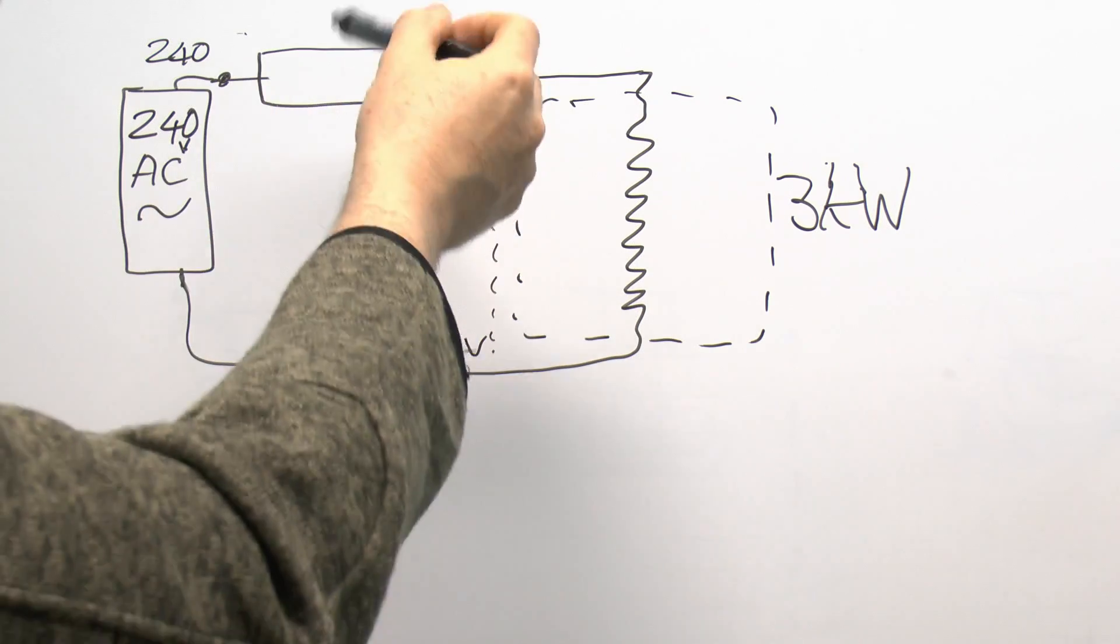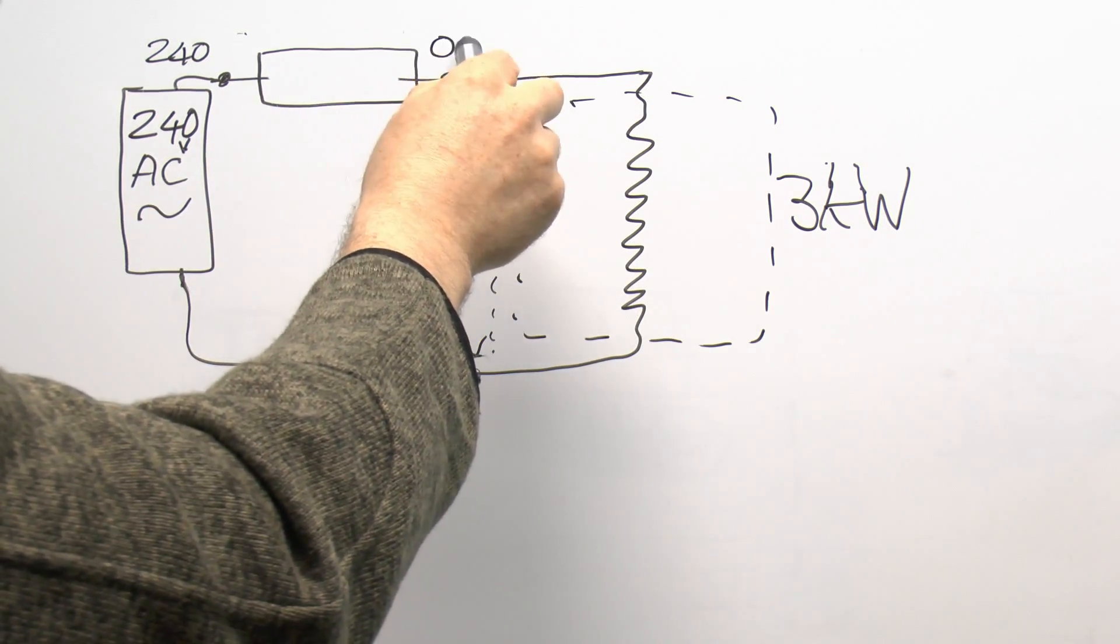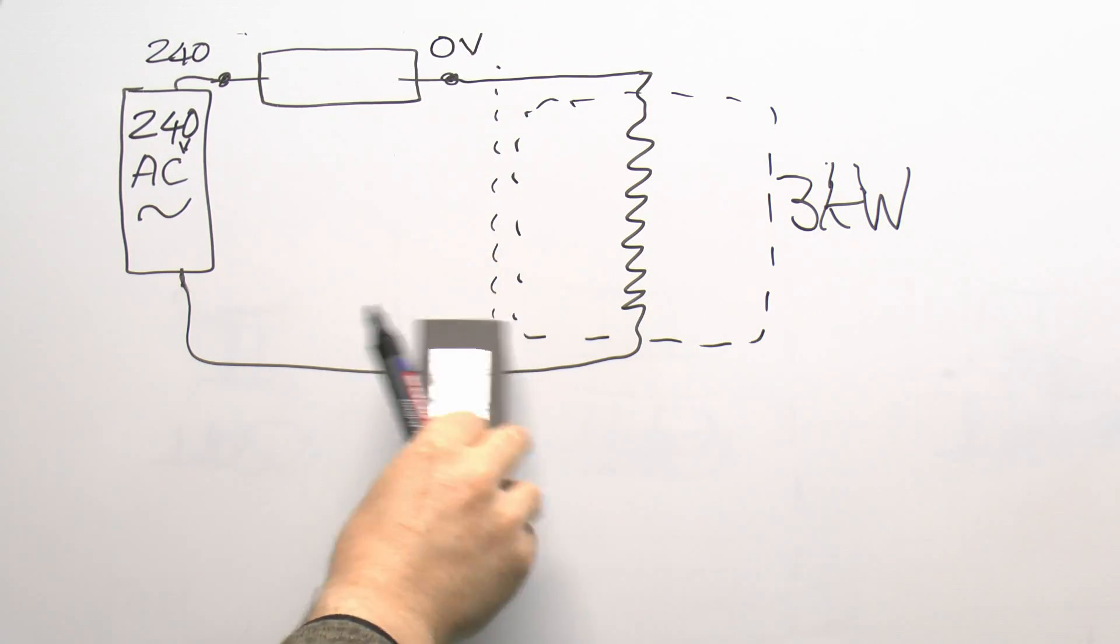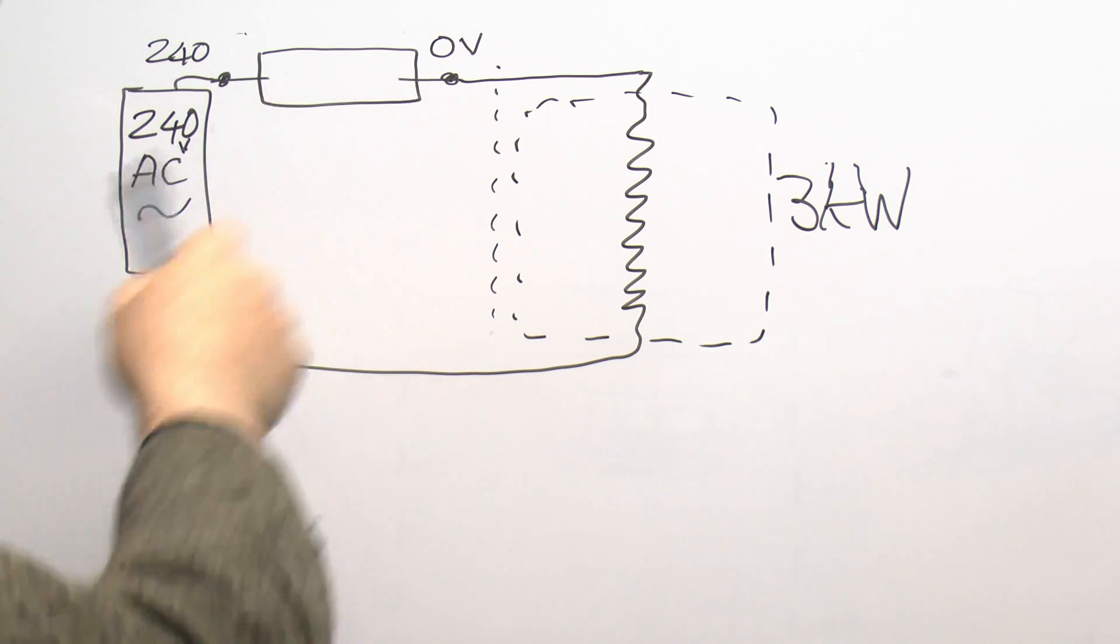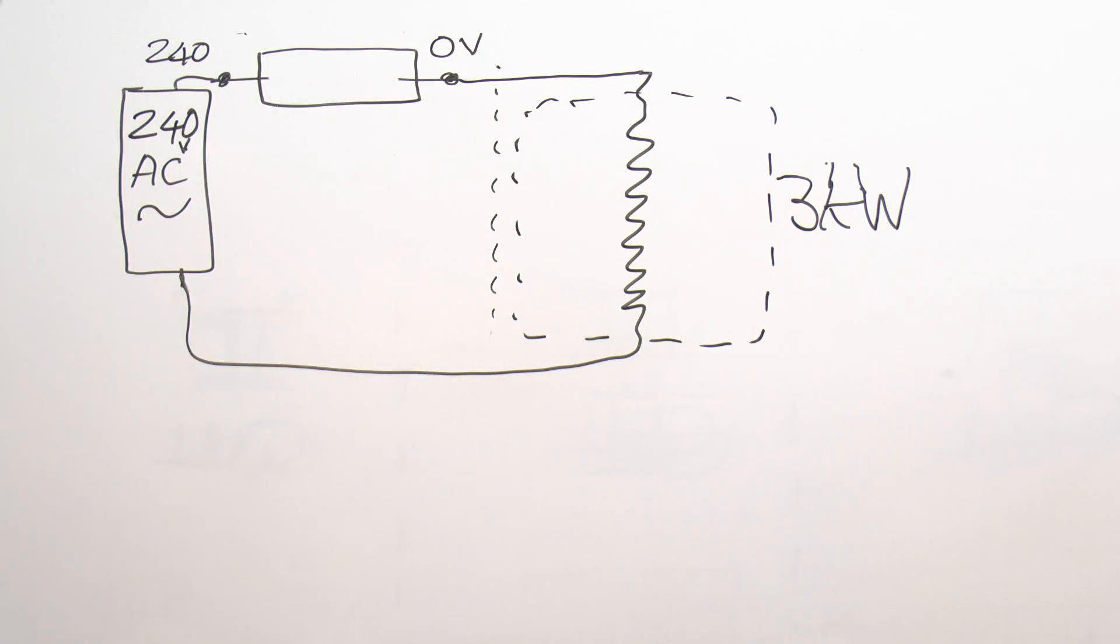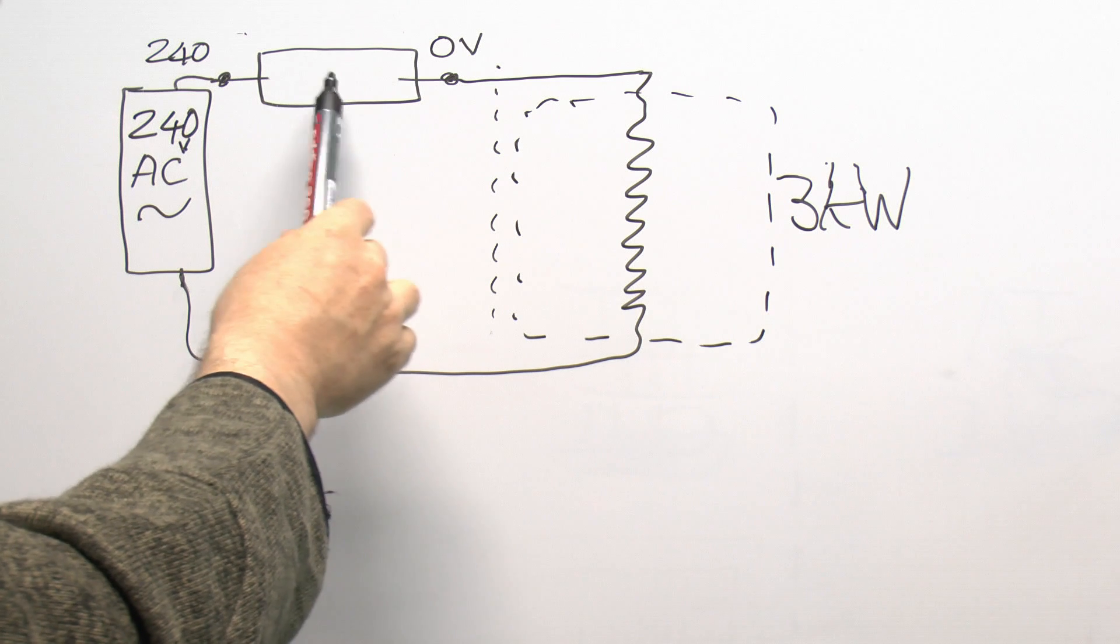This of course is now a low resistance compared to this massively open circuit, so this becomes your zero volt point. And essentially you've got two points with the full mains voltage between them.